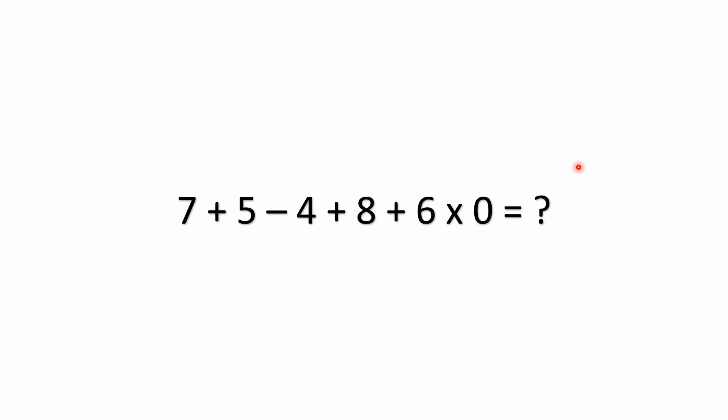Hello everyone, and welcome back to the Math Puzzle Crash Course. We have a simple mixed operations problem here that mixes addition, subtraction, and multiplication. The problem is 7 plus 5 minus 4 plus 8 plus 6 times 0 equals what?